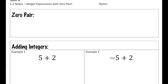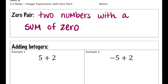So to start, let's talk about a zero pair — two numbers that have a sum of zero, or a pair of numbers that add up to zero. In this video, we're going to be looking at adding positive and negative numbers. When talking about positive numbers, I'm going to use a plus sign, and when talking about negative numbers, I'm going to use this negative symbol.